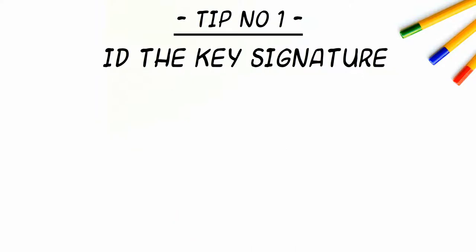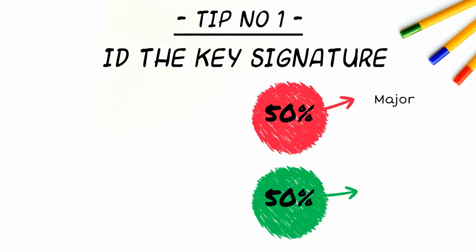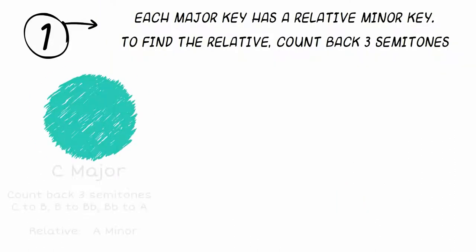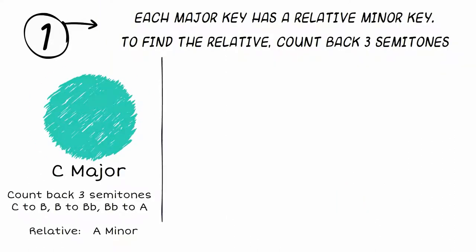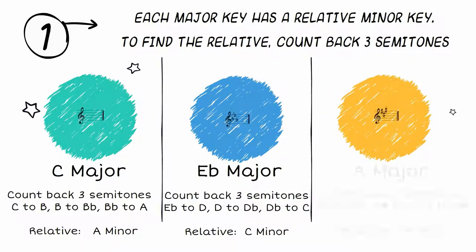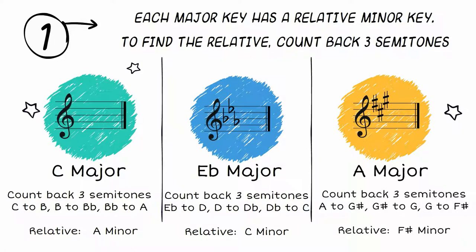Tip number one: ID the key signature. You've got a 50% chance of it being major or minor — you just need to decide what your options are. Each major key has a relative minor. To find the relative, you just need to count back three semitones: C to B, B to B flat, B flat to A, meaning the relative minor in the key of C major is A minor.